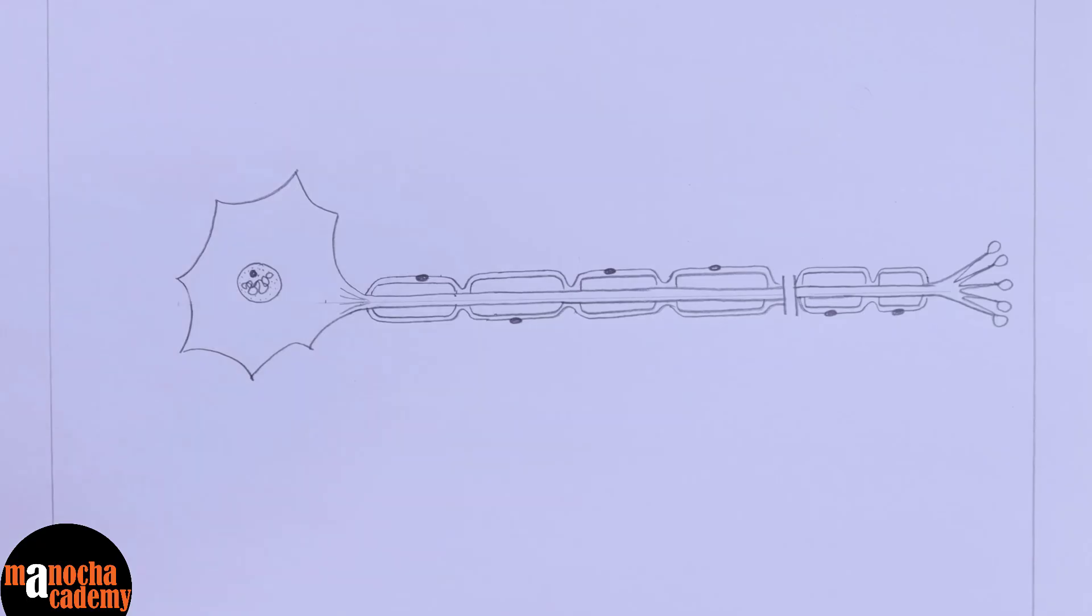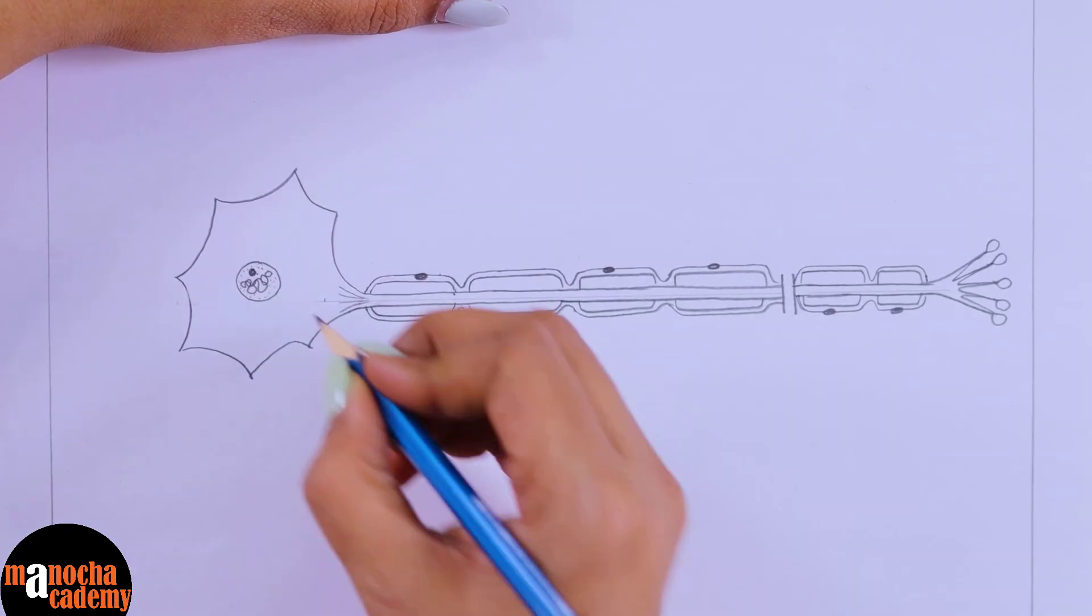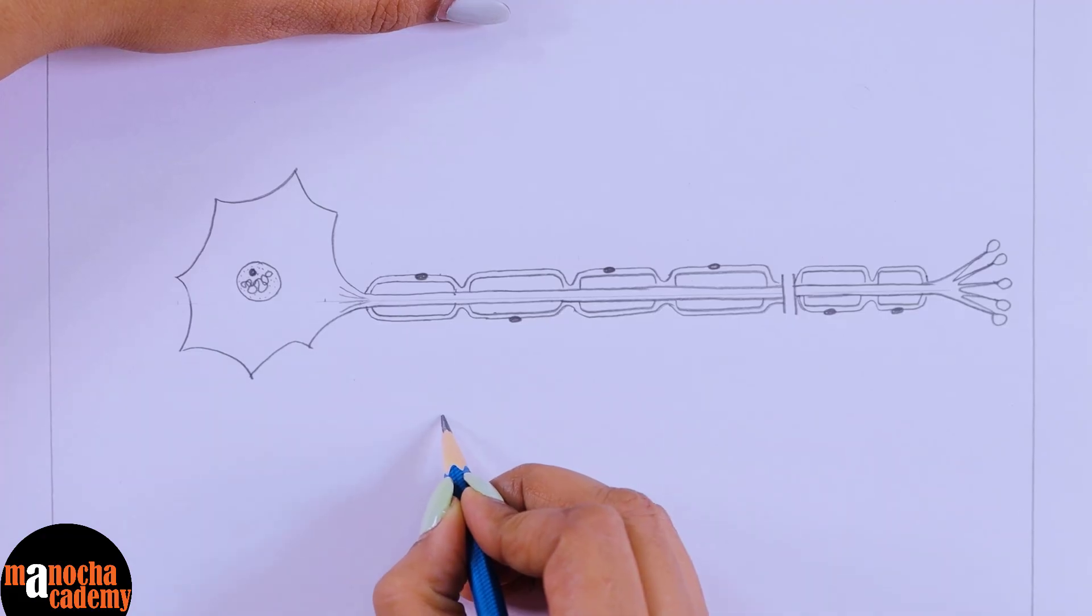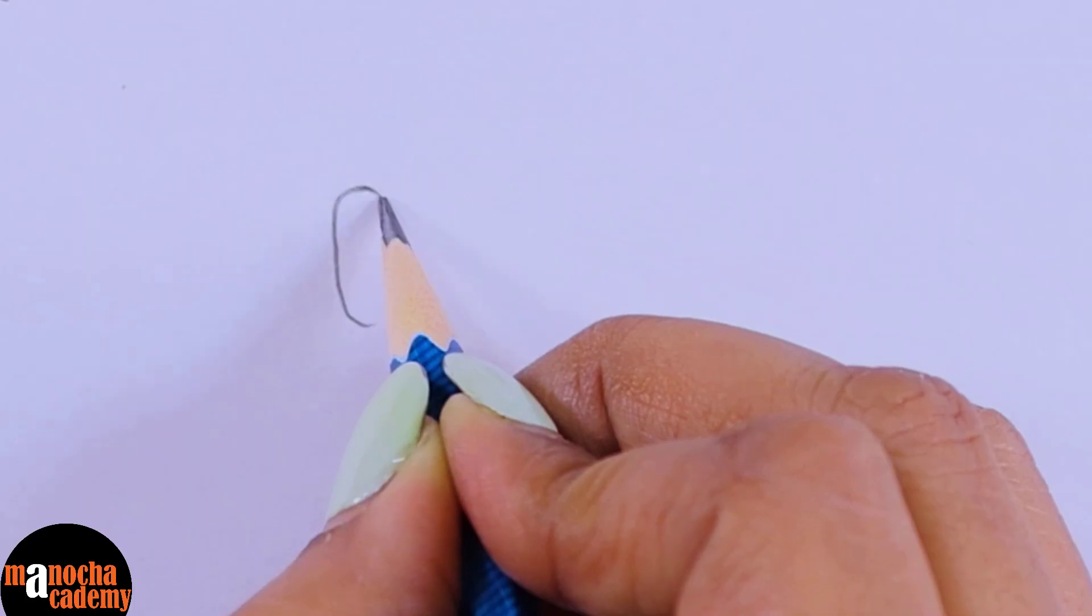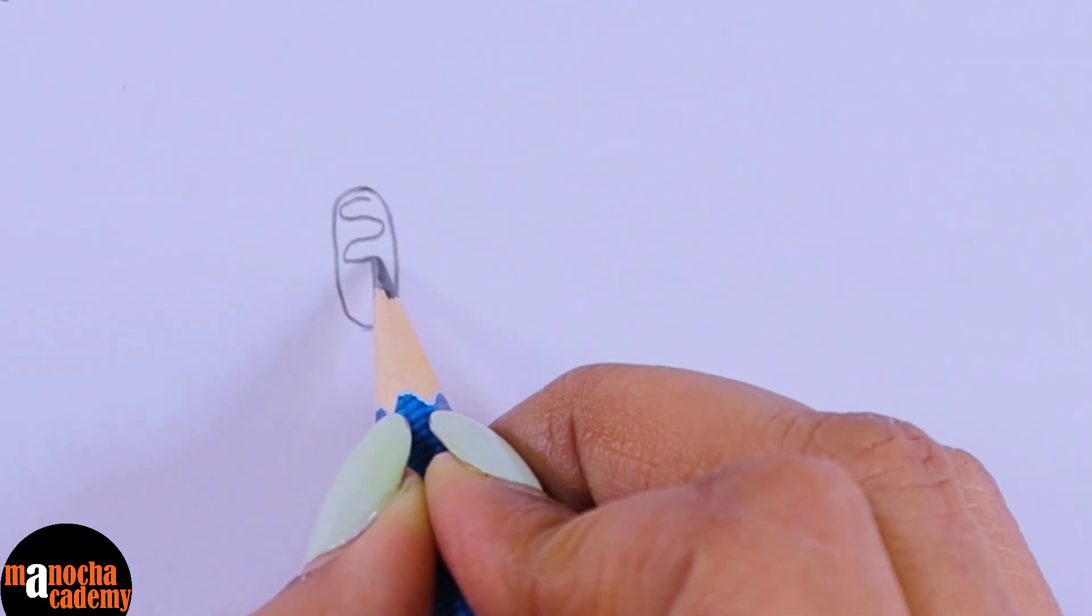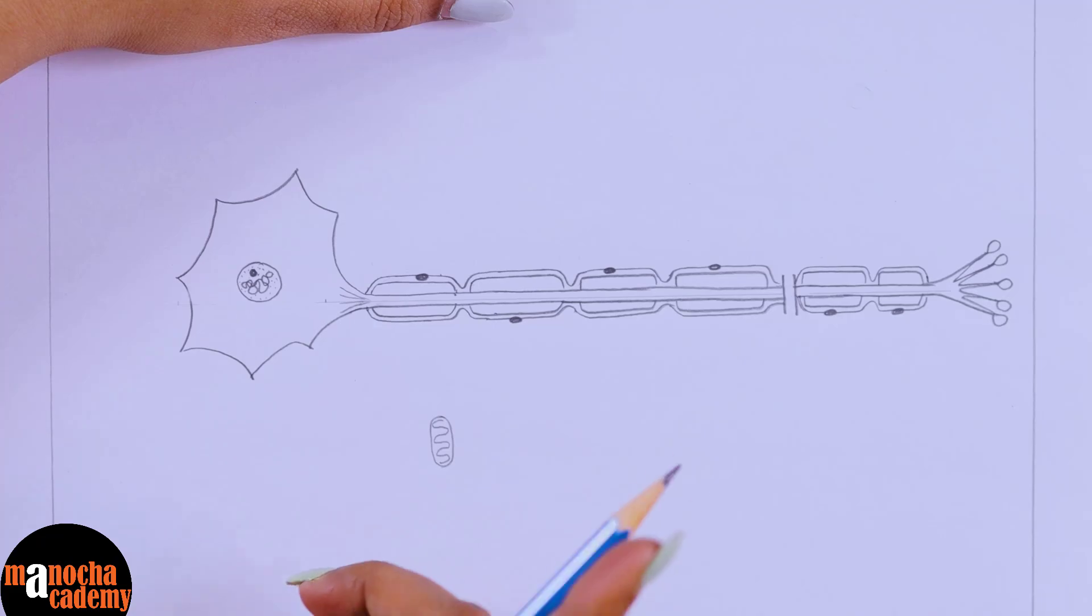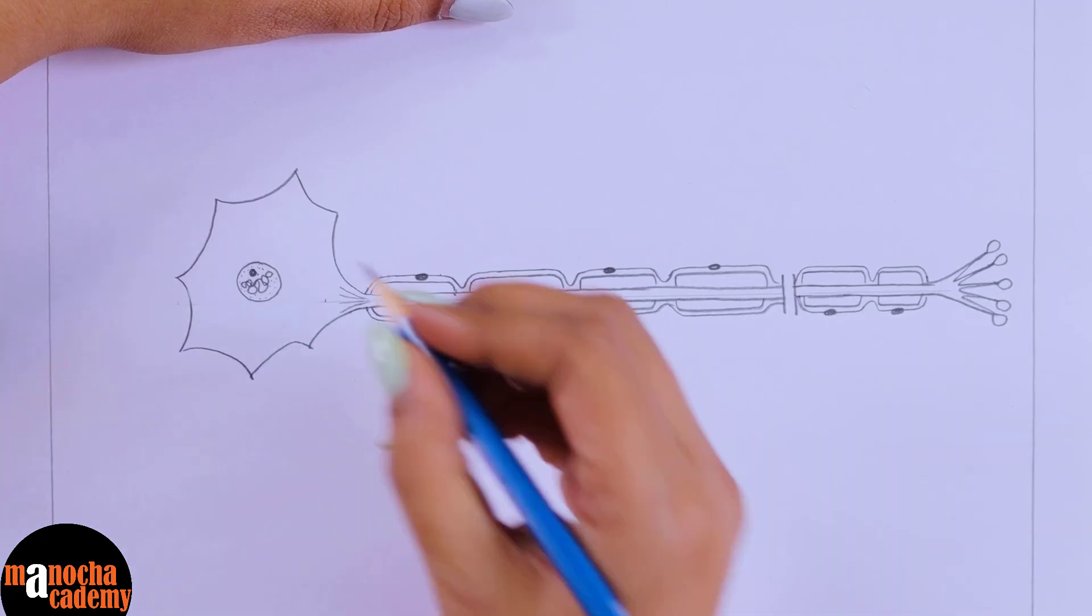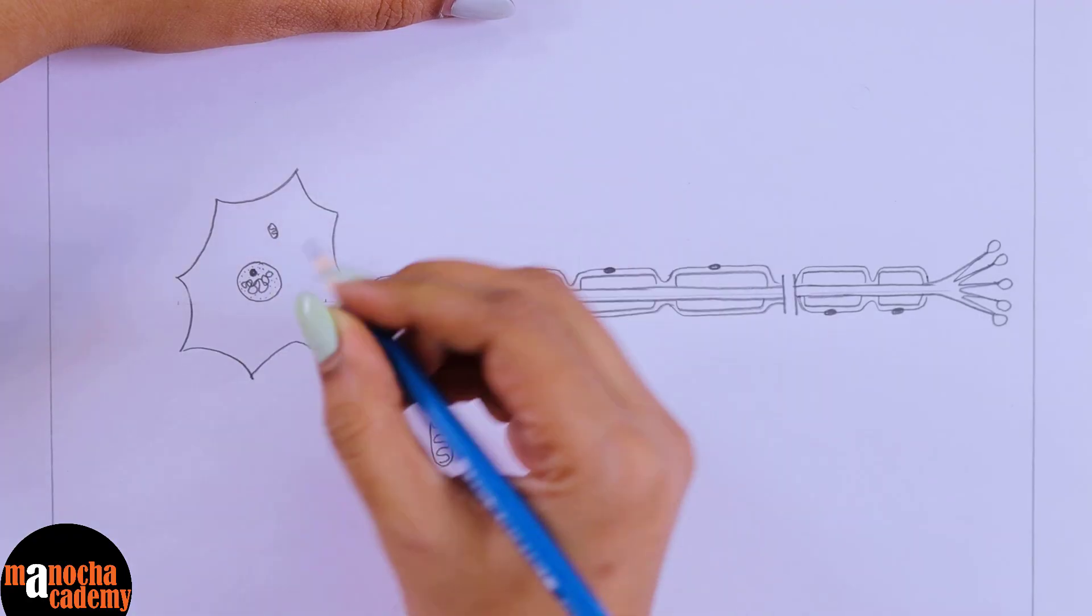Now we'll draw some mitochondria. While drawing mitochondria, the way we draw mitochondria is you'll draw an elongated structure like this and then you draw a spiral inside. That is how you draw mitochondria. Remember, if the size of the nucleus is this, the size of the mitochondria will be much smaller. Right, so I'll draw a few mitochondria wherever I want inside the cell.